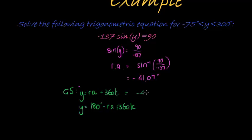That's what's going to happen if I replace reference angle with that negative. I get negative 41.07 plus 360 degrees times k. Same here, 180 negative negative gives me positive 41.07 plus 360 degrees times k.